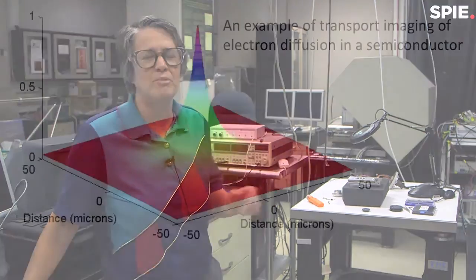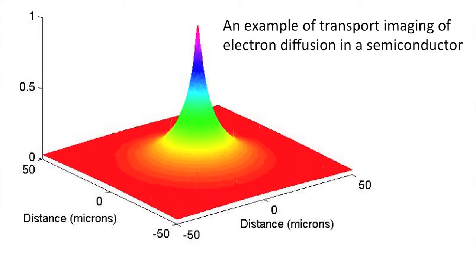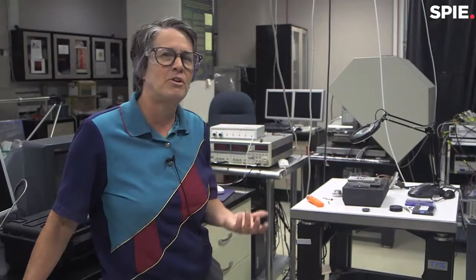So we generate the charge and cause it to move — either because charges move away in general through the diffusion process, or through the application of an electric field — and we literally watch them move through the emission of photons. It's a unique application of using photons to track electronic properties.